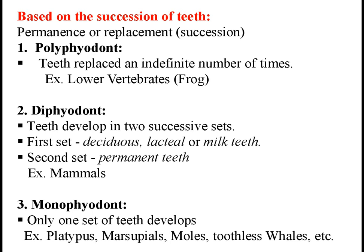According to their permanence or replacement, teeth are classified into three categories: polyphyodont, diphyodont and monophyodont. In polyphyodont, poly means many, phyo means growth, odont means teeth. In lower vertebrates, teeth can be replaced an indefinite number of times during the lifetime of an animal. That is, if a tooth falls down due to injury or any other reason, a new tooth arises naturally at any age, any number of times. Such condition is known as polyphyodont.